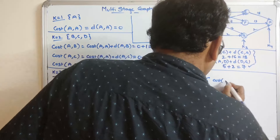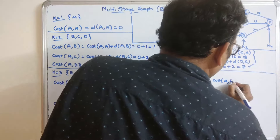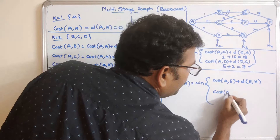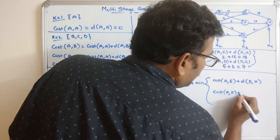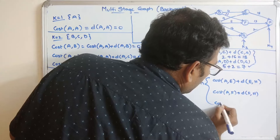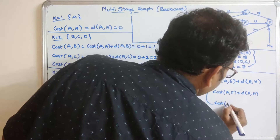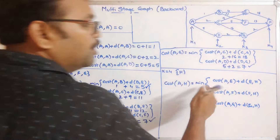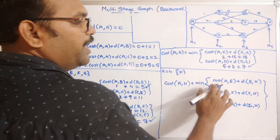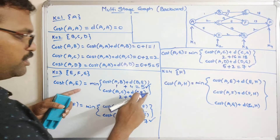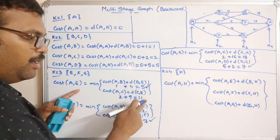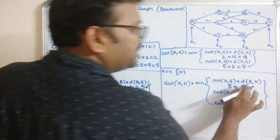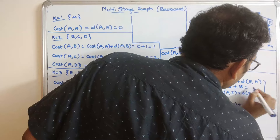Cost(A, E) = 5 plus distance(E, H) = 18, giving 23. Cost(A, F) = 7 plus distance(F, H) = 13, giving 20. Cost(A, G) = 7 plus distance(G, H) = 2, giving 9. Among 23, 20, and 9, the minimum is 9.